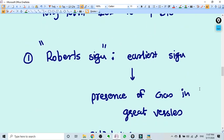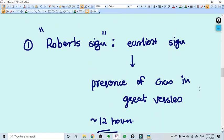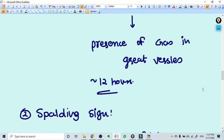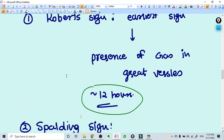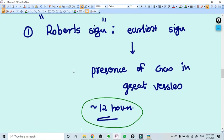First is Robert sign. Robert sign means there is presence of gas in great vessels, for example aorta, pulmonary veins, like that. So if there is presence of gas, then it is an IUD.